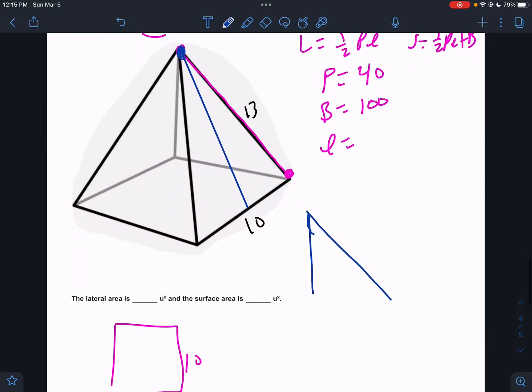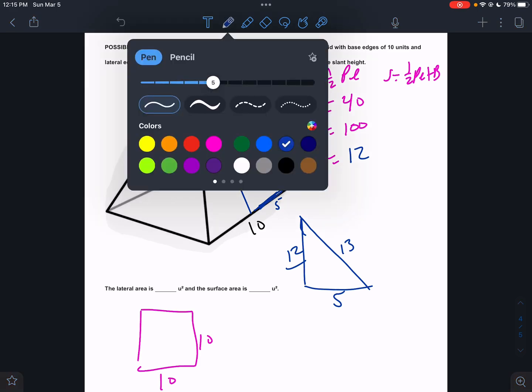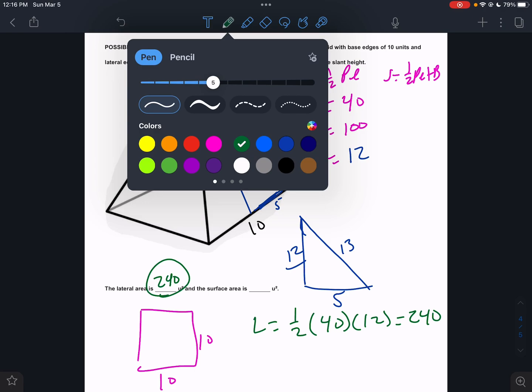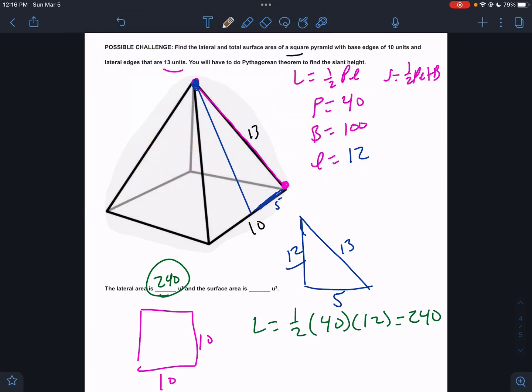So this right triangle would be 5, right? Half the base would be 5, a hypotenuse of 13. That's a 5, 12, 13 triangle. So we have all the pieces now. So lateral surface area is going to be 1 half times P times 12. And that's going to be 6 times 40. That's going to be 240. The total surface area is going to be that 240 number plus one base. One base is 100. That's going to be 340. There's my total surface area.